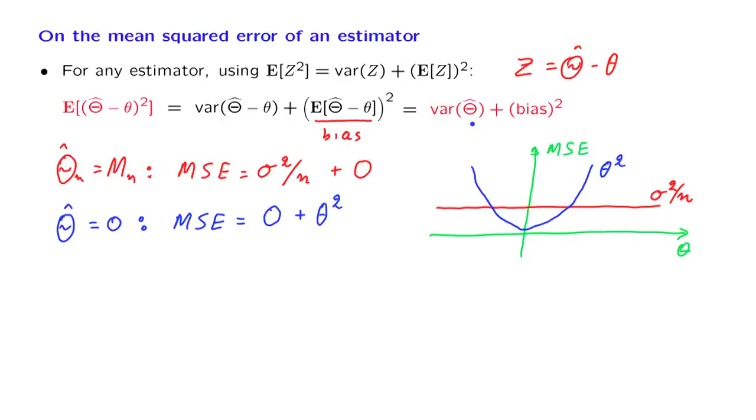In any case, going back to this formula, this quantity, the variance of the estimator plays an important role in the analysis of different estimators. And the more intuitive variance of this quantity is its square root, which is the standard deviation of the estimator, and is usually called the standard error of the estimator.